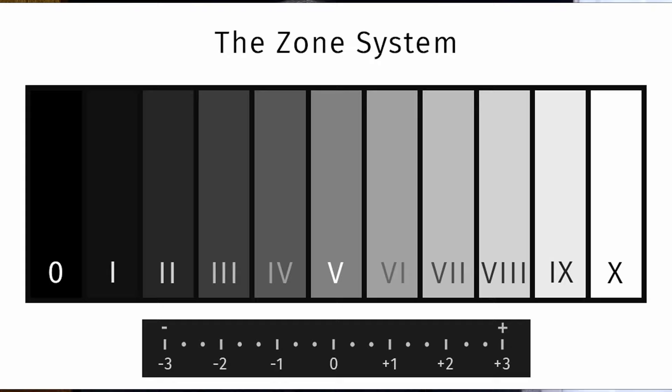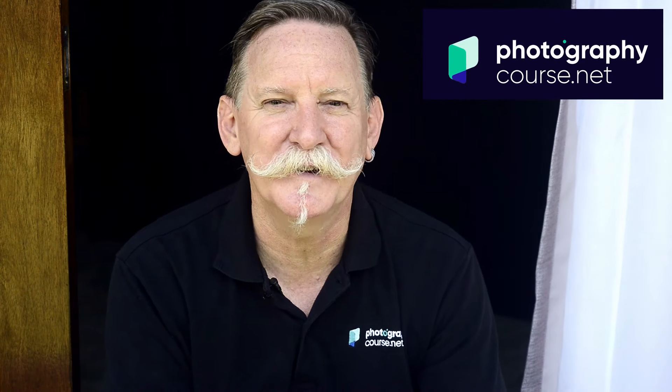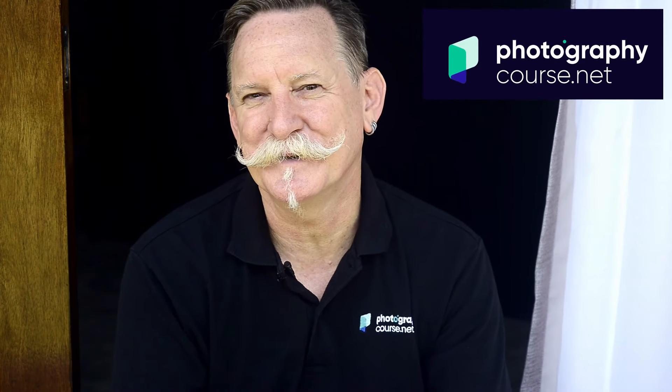The zone system can help you understand tone values and exposure. This system divides tone into 11 zones, with zone 0 being black and zone 10 being white. It may seem over-complicated, so in this video I want to simplify it and show you how you can make practical use of it.